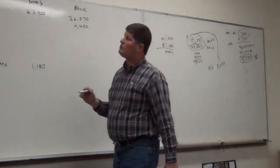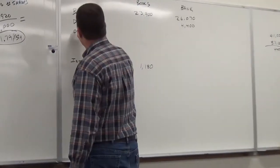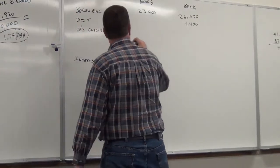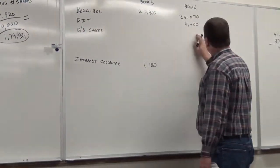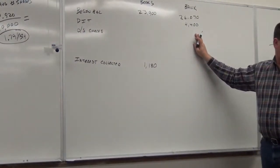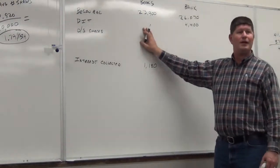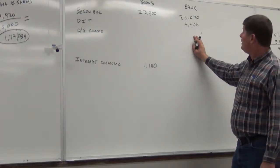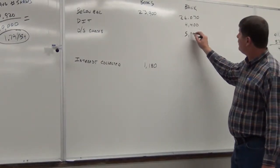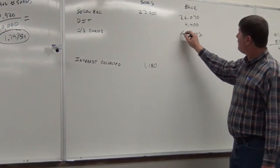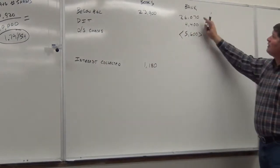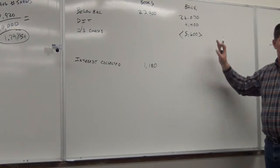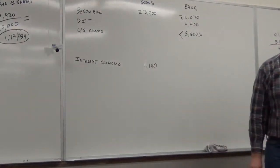So, using the numbers they gave us, I'd have to back into March's outstanding checks to get this. In the normal world, we wouldn't be backing into it. We'd know this number. We would know this number. We would do this calculation here and come up with this. Actually, what you do is you look at every check individually and you check them off and then you add up the ones that aren't checked off. Okay? So, what would you do for the $5,600? What is that? Okay. Let me go through it one more time.